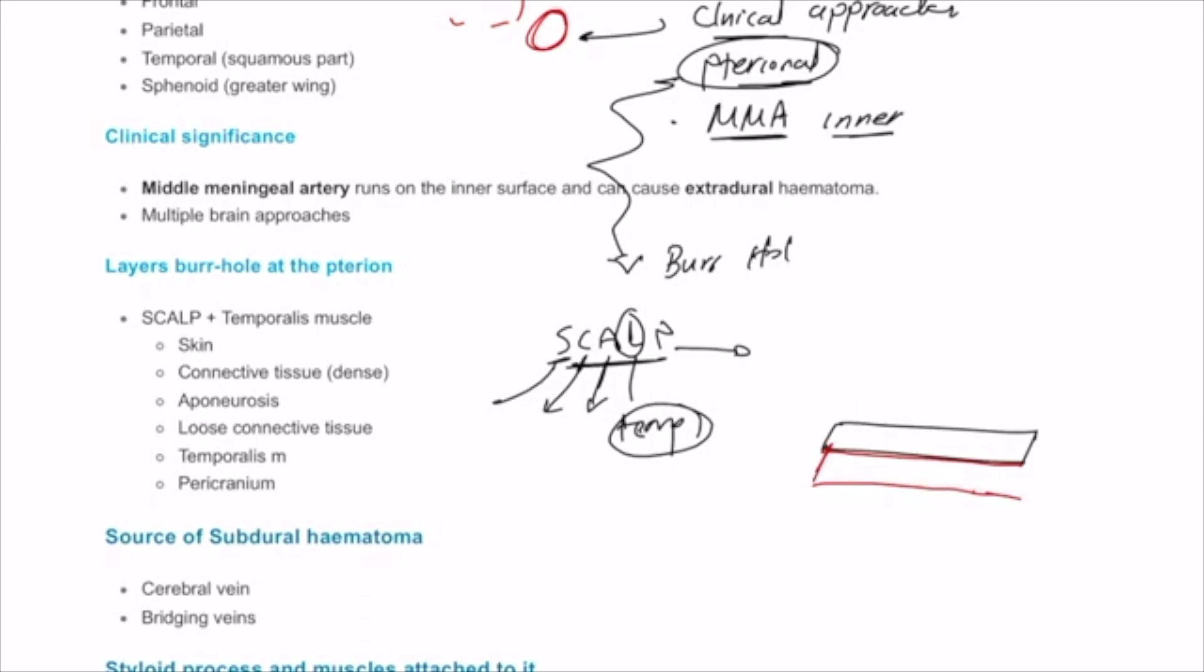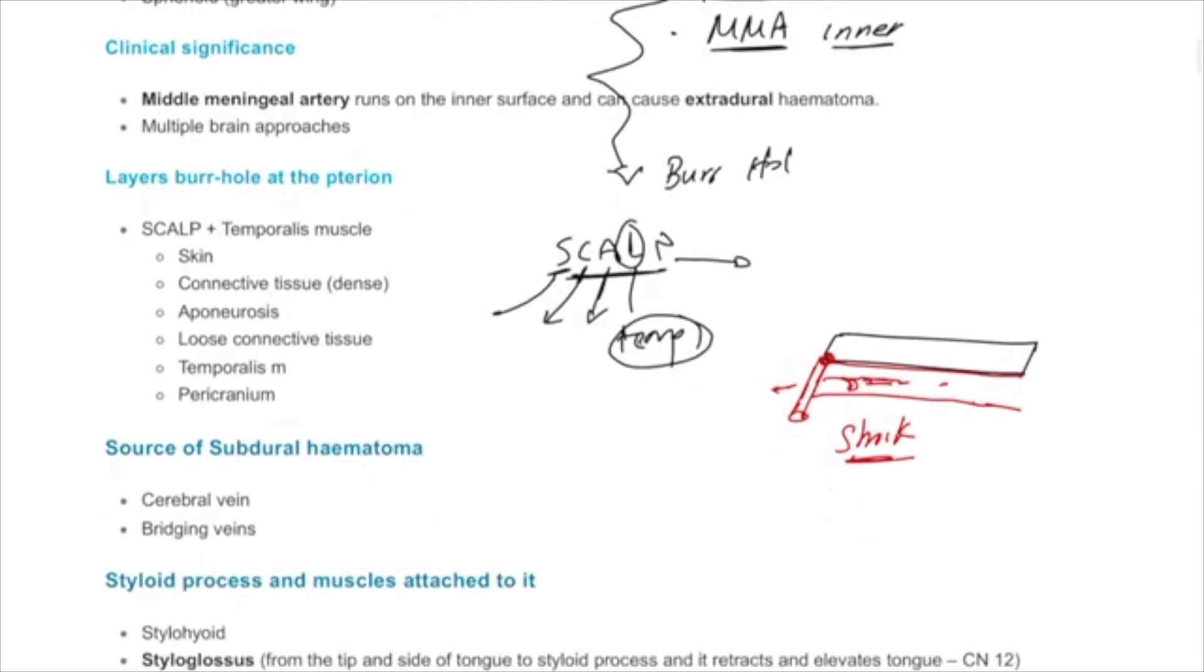You have some bridging veins connecting between the sinus here and down there. When the brain starts to shrink in size, this bridging vein will stretch and might cause some sort of bleeding in this area which is called subdural hematoma, or even stripper veins which will be found on the wall of the arachnoid mater.